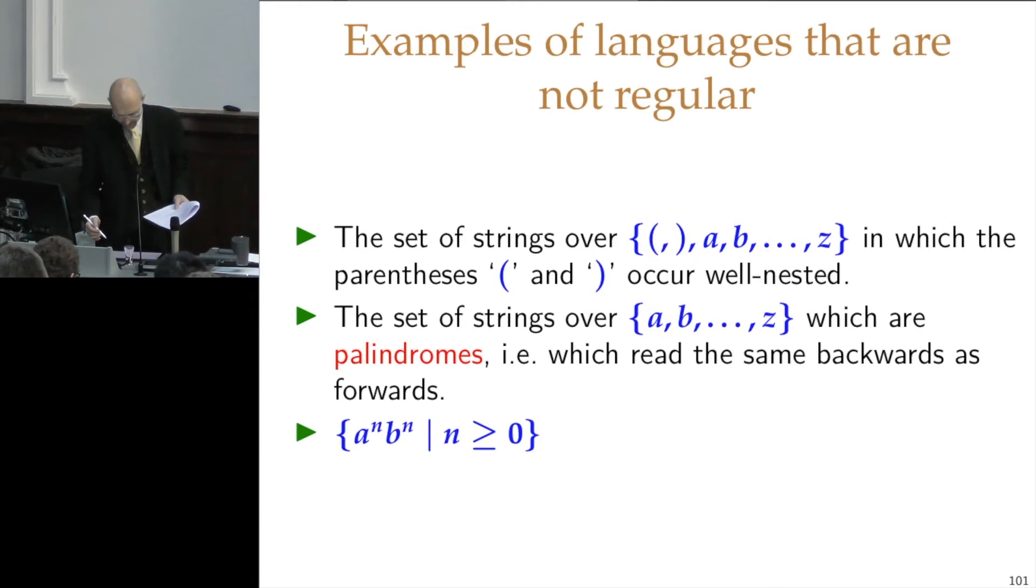What else have we got here? The set of strings over the lowercase letters which are palindromes, i.e. which read the same backwards as forwards, so ABCBA is a palindrome. Or the set of strings made of A, A, A, A, B, B, B, B, as many B's as there were A's, one following the other. All these things are not regular.